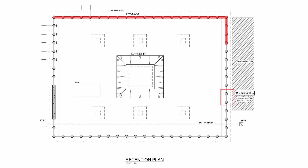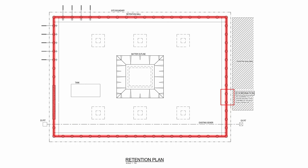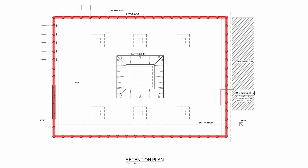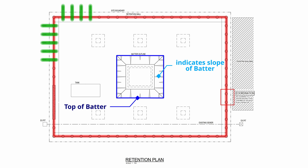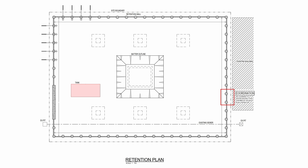On the bulk excavation drawing we've got the external pile retention system, as we need to retain back the soil. This needs to go in first — you need to drill your poles in and build your shotcrete walls to allow the excavation to continue. You can also see soil nails and soil anchors, as these poles are getting quite high and need a way of holding back the soil. You can clearly see where the bulk excavation lines are, with a batter line highlighted and different potential RL levels shown.